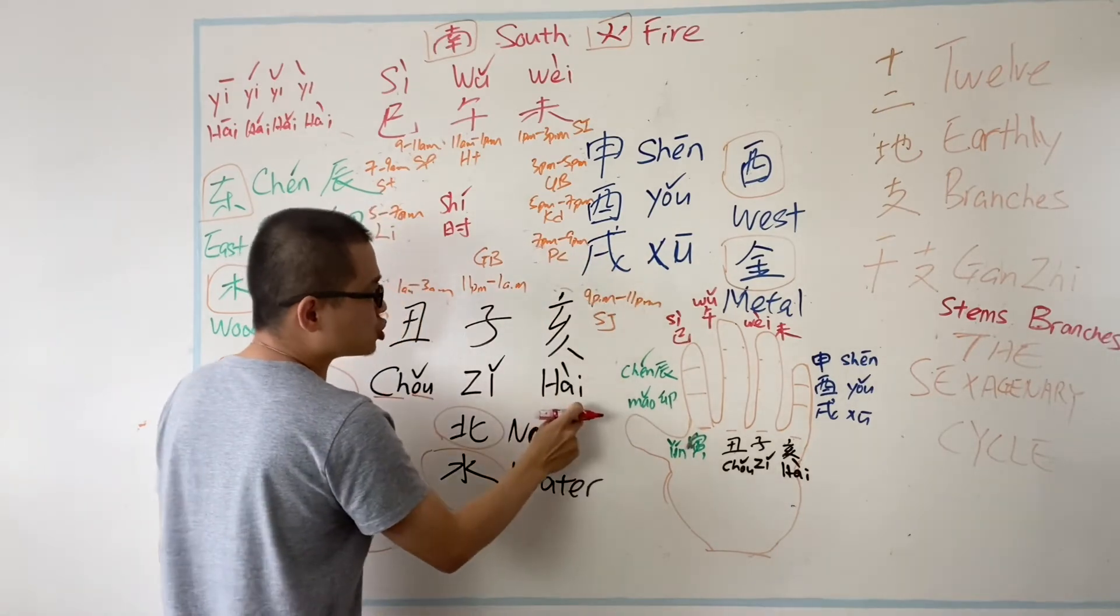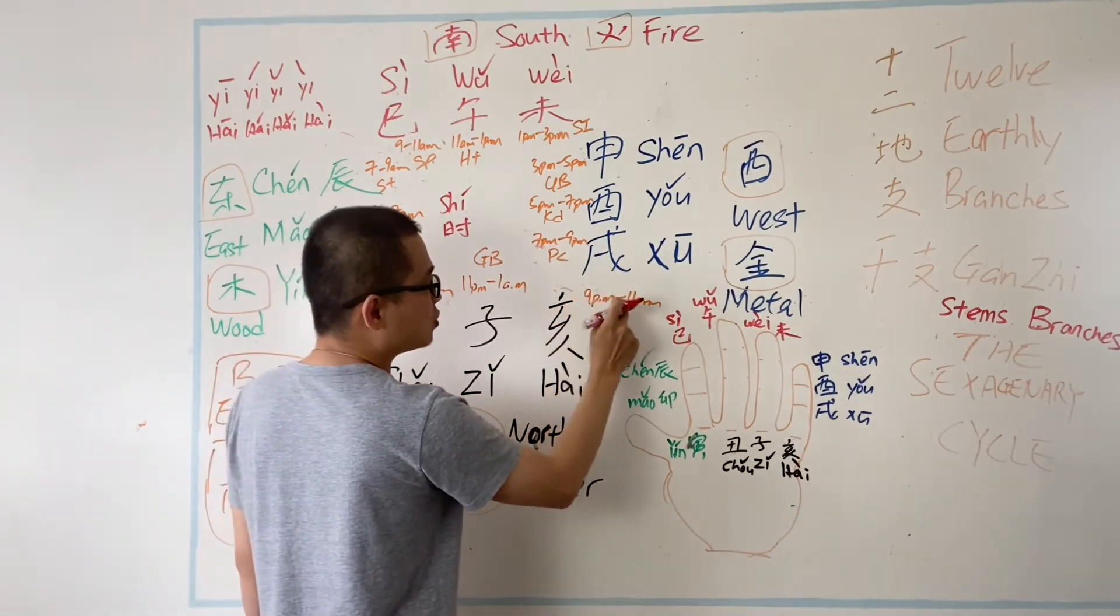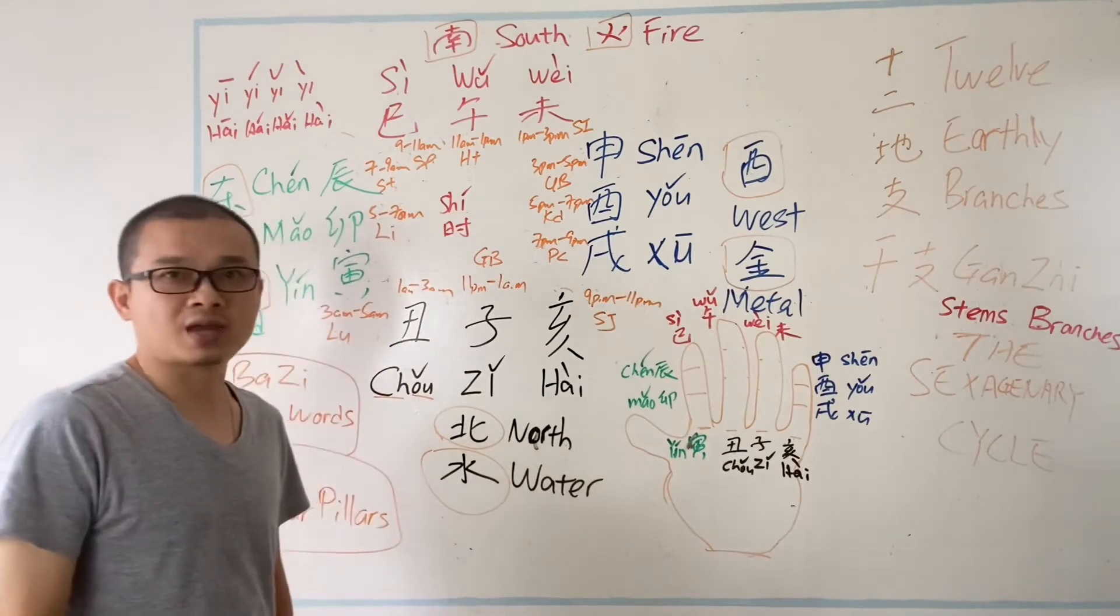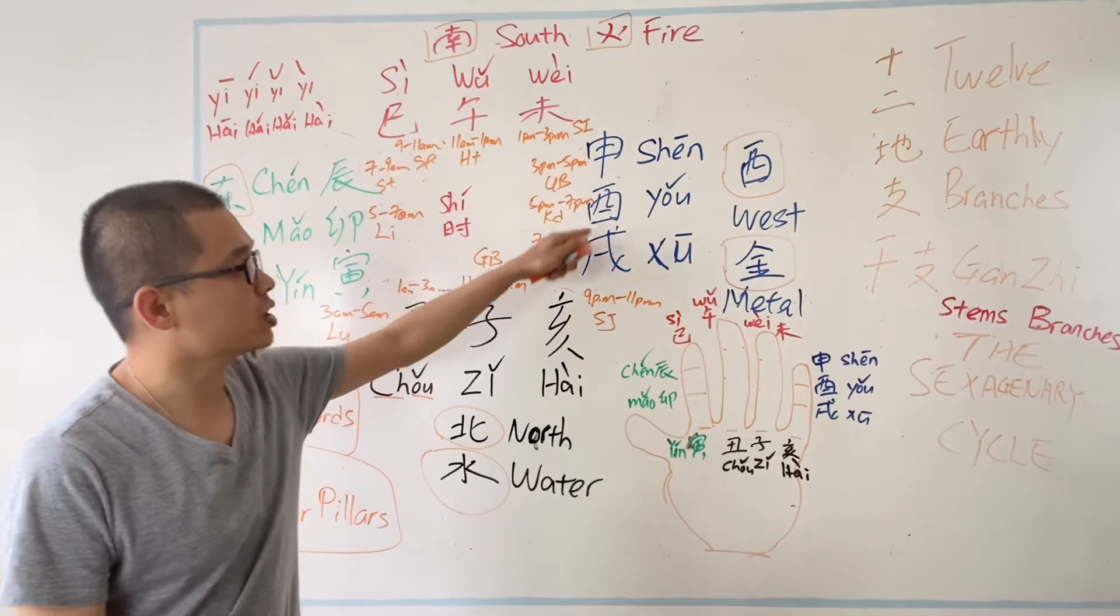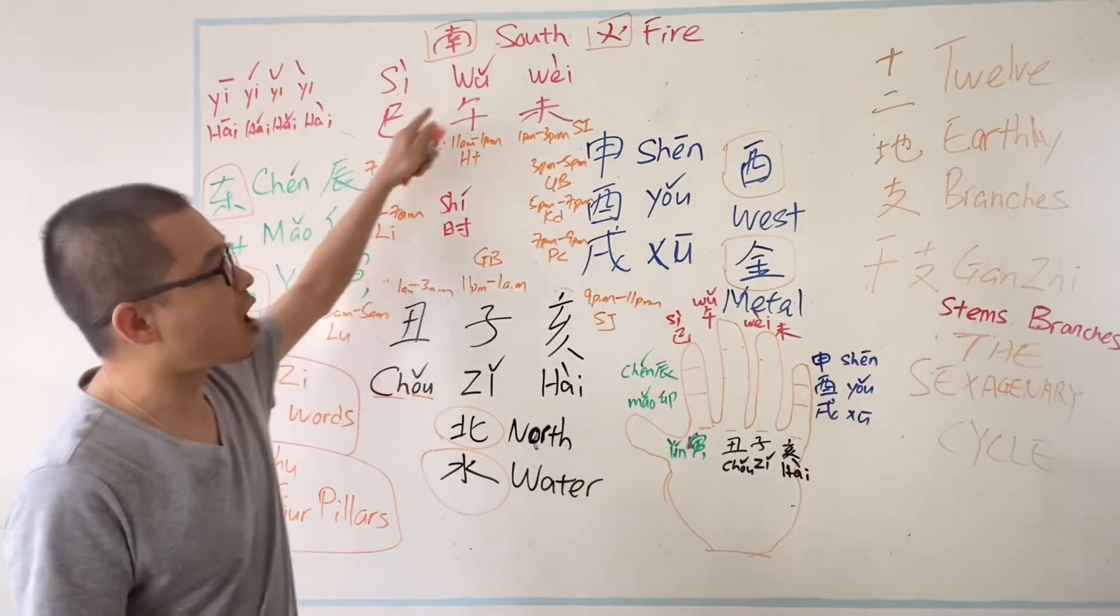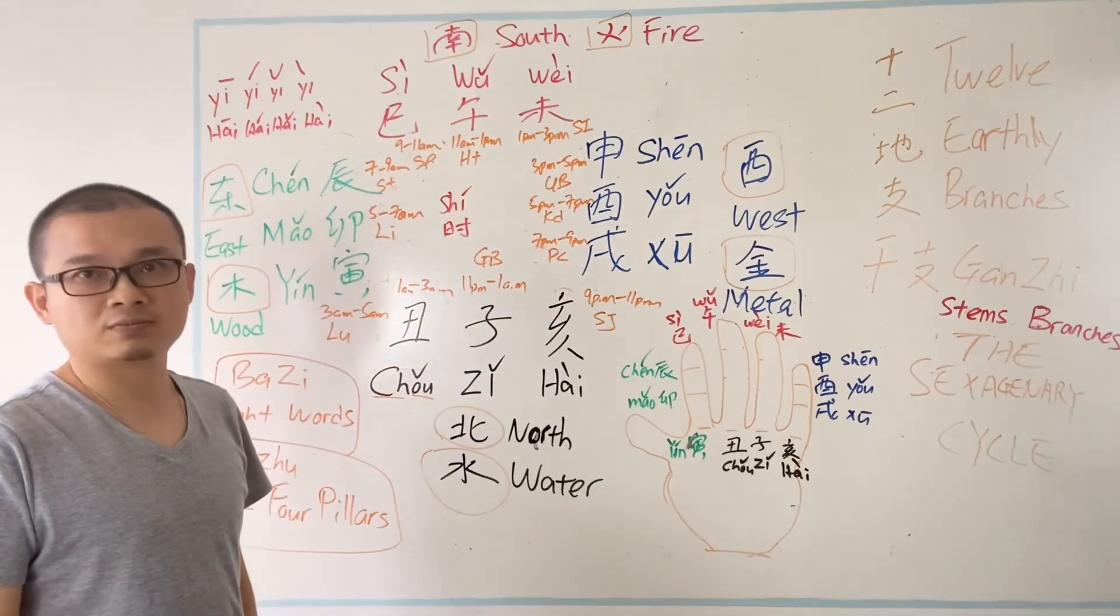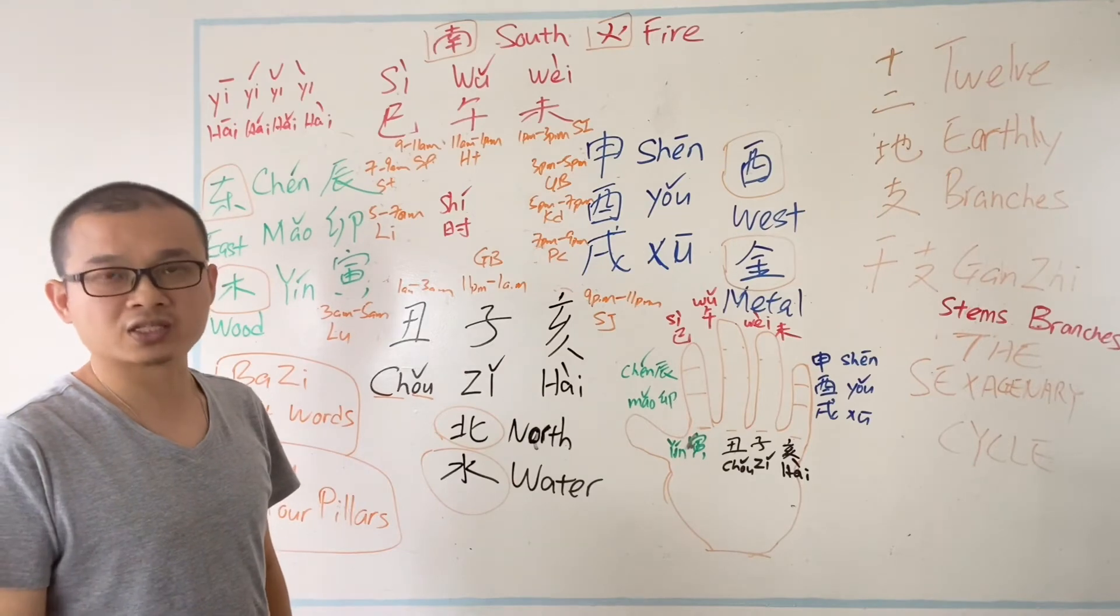And 亥时 is between 9pm to 11pm. So that is the Chinese clock in the old time. We use only 12 时.